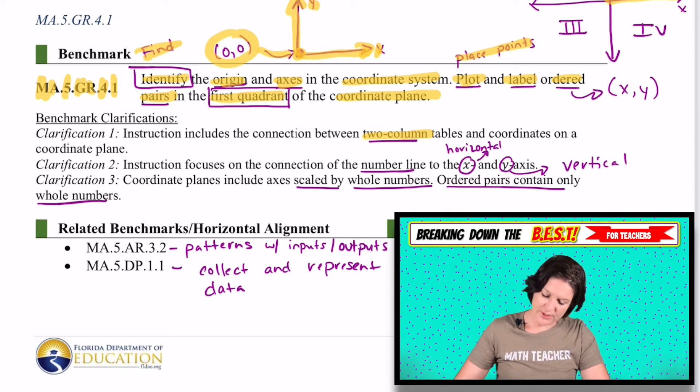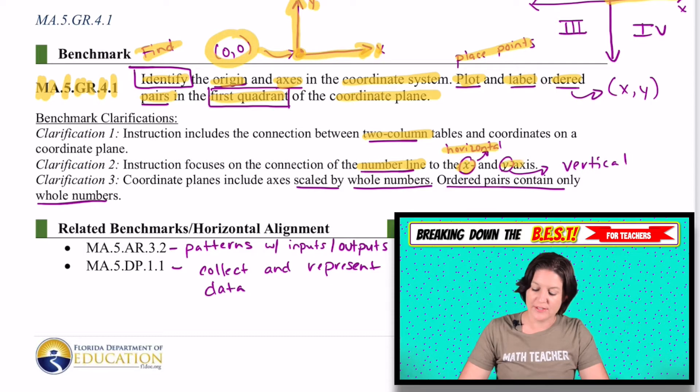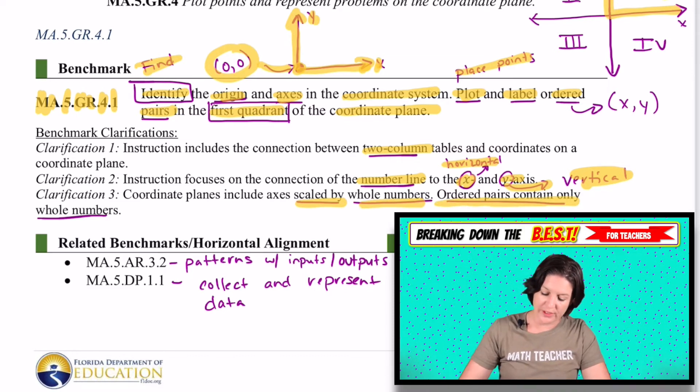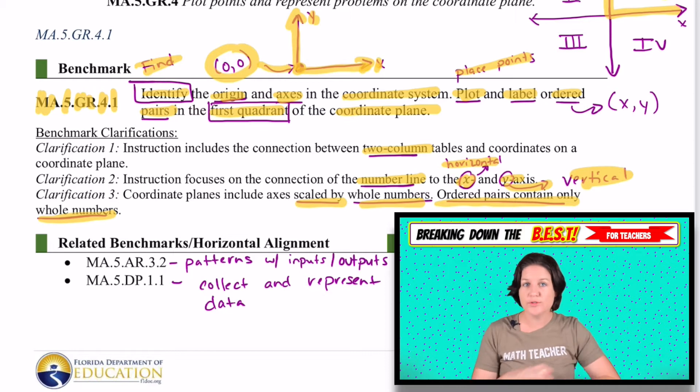Clarification number two says that instruction focuses on the connection of the number line to the x or the horizontal axis and also the y axis, which would be the vertical axis there. Coordinate planes include axes that are scaled by whole numbers and ordered pairs may only contain whole numbers. So no decimals, no fractions. We're just working on whole numbers.